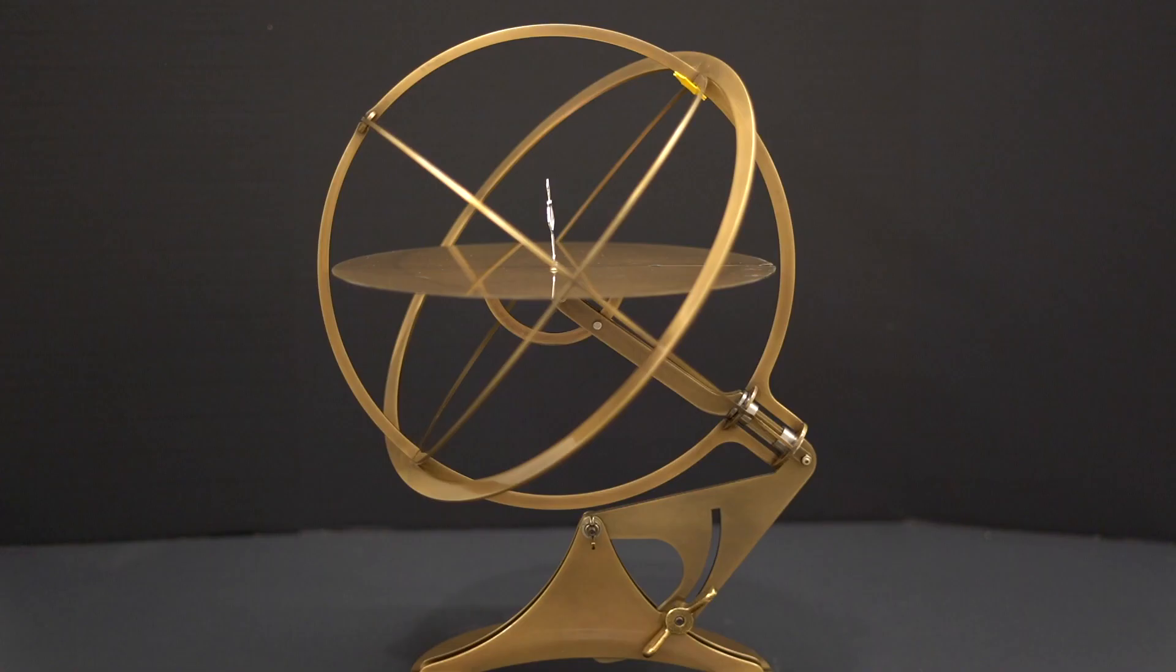We can also visualize lunar phases by making use of an armillary celestial sphere. Here our observer is at the center of a horizon representation of the celestial sphere. We note the cardinal points along the horizon.